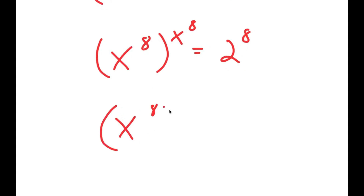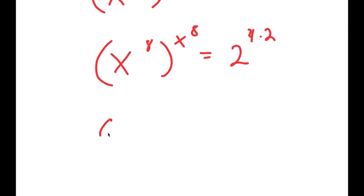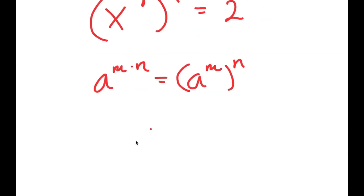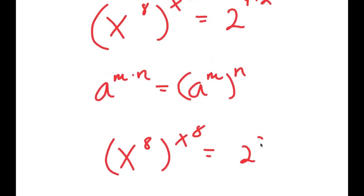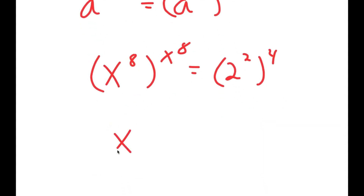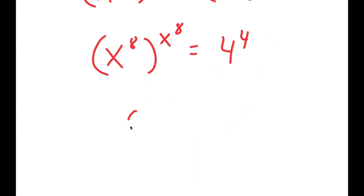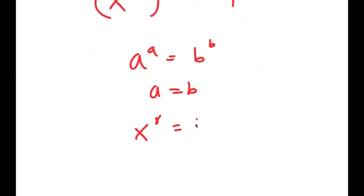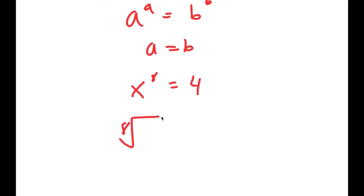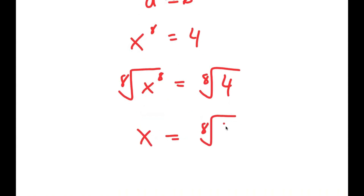Now I can rewrite 2 to the power of 8 as 2 to the power of 4 times 2. Using a to the power of m times n equals a to the power of m to the power of n, this becomes 2 squared to the power of 4, which equals 4 to the power of 4. So x to the power of 8 to the power of x to the power of 8 equals 4 to the power of 4. Because this is in the form a to the power of a equals b to the power of b, meaning a equals b, so x to the power of 8 equals 4. Taking the eighth root on both sides gives x equals the eighth root of 4.